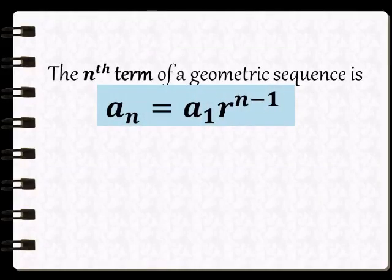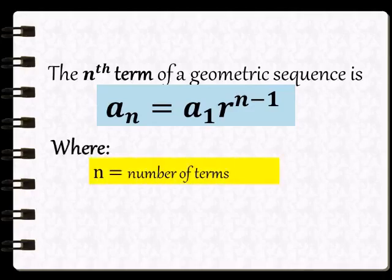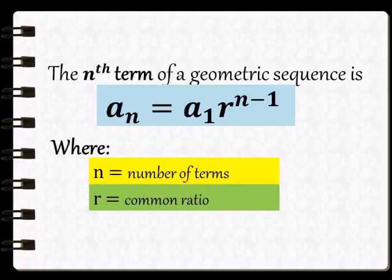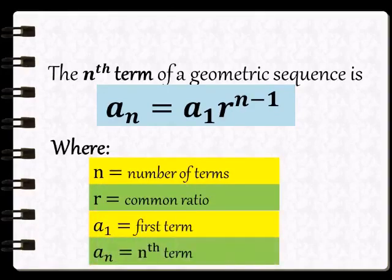Para makuha natin yung hinahanap na term, gagamitin natin ang formula na a sub n is equals to a sub 1 times r raised to n minus 1. Kung saan, n is the number of terms, r is the common ratio, a sub 1 is the first term, and a sub n is the n term. Mamaya, makikita natin sa examples ang mga yan.